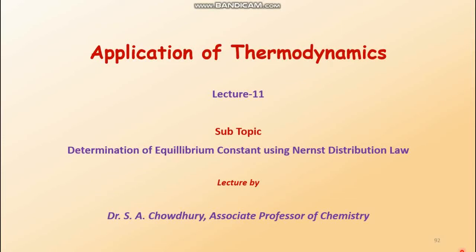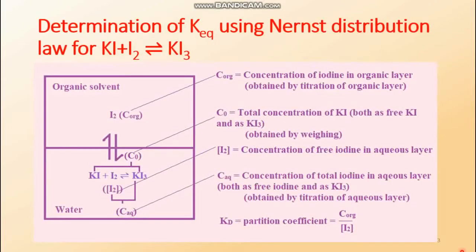Hello everyone. In this lecture series on applications of thermodynamics, this is the last lecture — Lecture 11 — where the topic of discussion is determination of equilibrium constant using Nernst's distribution law. The Nernst distribution law can be utilized in determining the equilibrium constant Kc of reactions such as: potassium iodide plus iodine equals potassium triiodide, i.e., KI + I₂ ⇌ KI₃.